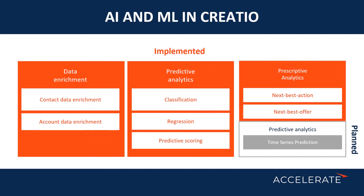Predictive analytics — what's already implemented — includes classification, regression, and predictive scoring. We can do classification; the example is routing a problem or complaint from a customer, or a request for help or assistance. Before we start working on it, we have to make sure we're routing it to the right person. Having the right routing helps us improve customer experience by reducing the amount of time that a request is sitting idle while we're trying to figure out who should be looking at it. That's your classification.